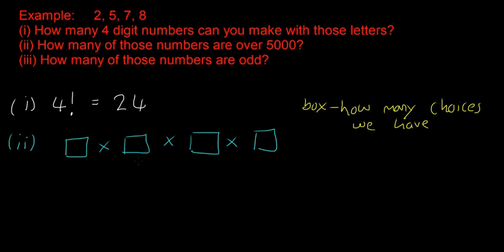The first box is how many choices we have for the first digit, the second box is how many choices for the second digit, and so on. Normally we fill them in from left to right, though sometimes you have to start on the right side — we'll see that in the last example. If there are no restrictions, we could put any of the 4 numbers in the first box, so the answer would be 4.